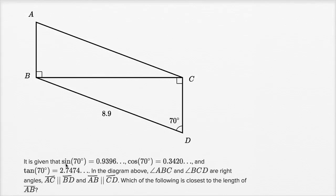It is given that they give us the sine, cosine, and tangent of 70 degrees, or at least they give us the first few digits of them.